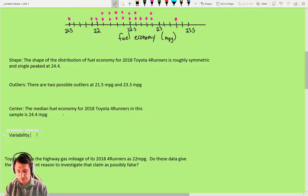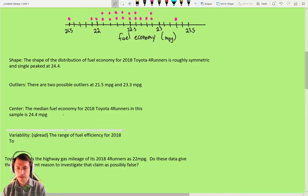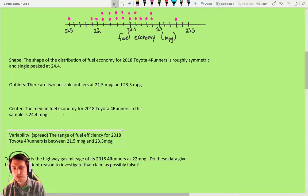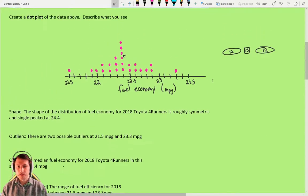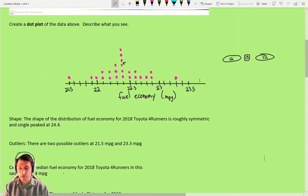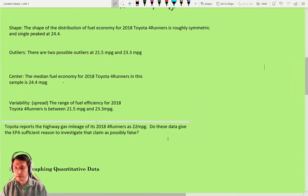Variability. Another word for this is spread. How is this spread out right now? Pretty much the only one we have is the range. The range of fuel efficiency for 2018 Toyota 4Runners is between 21.5 MPG and 23.3 MPG. So there I have now described the distribution of 2018 Toyota 4Runners from this sample that they took.